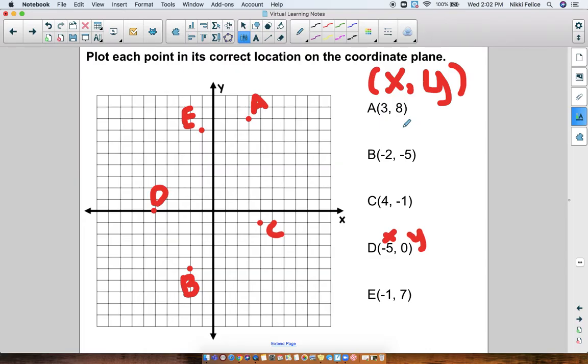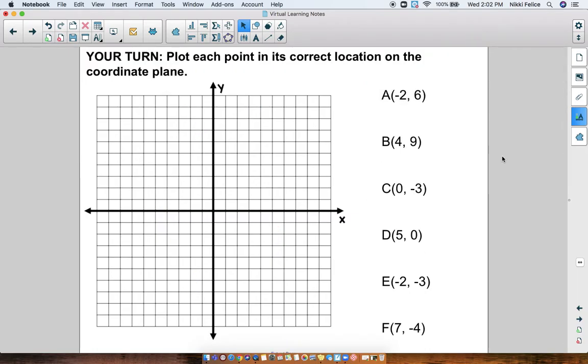So make sure when you do this, you pay attention to which coordinate is for the x-axis and which one is for the y-axis. You always go left and right first. We always do x first. Then you can go up or down. That always comes second. Okay, so I just want you guys to try a few problems by yourself here. So in a second, I'm going to have you pause the video. And I want you to plot each point in the correct location on the coordinate plane. Do this in your notebook. And then when you are done, click play so that you can check your answers.